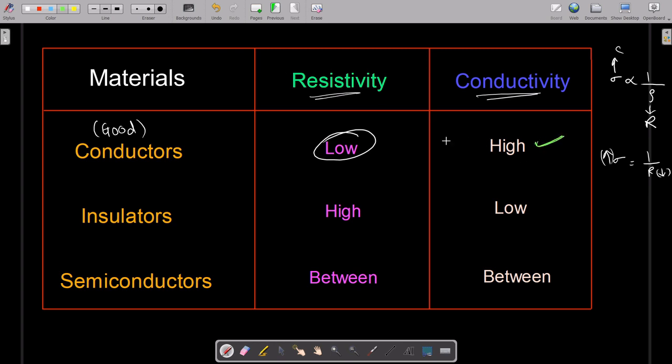Now for insulators, as you can see here, the resistivity is pretty high. For conductors, the resistivity is low, and for insulators, the resistivity is pretty high.